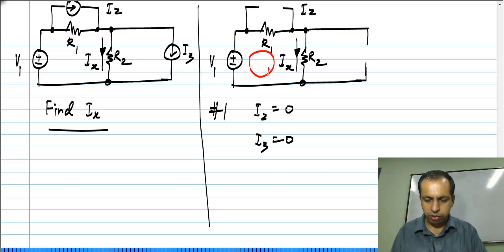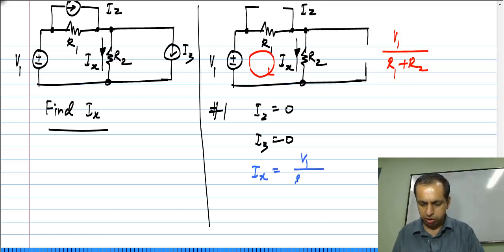We can find the current in this loop very easily and you know that that is V1 divided by R1 plus R2. And if you look at the definition of Ix, it is in the same direction as this current. So Ix from the first step will be V1 by R1 plus R2.